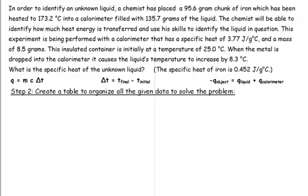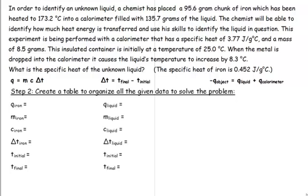The best way to solve a calorimetry problem is to create a table to organize all the given data. First, you know that we're going to need all of this information for the piece of metal: the Q, M, C, delta T, initial temperature, and final temperature. For the liquid, we will also need to know about the energy change, the Q, the mass, the specific heat, the change in temperature, et cetera. And we will need all of that information about the calorimeter as well.